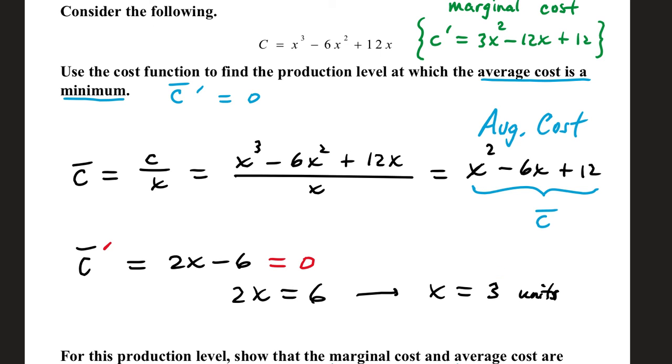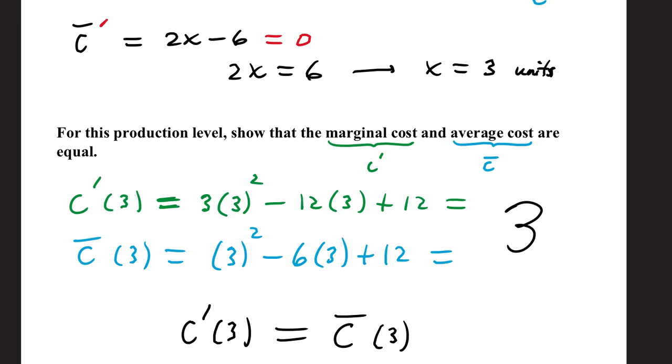Now, using this for part B, using this production level, show that marginal cost, that's the function in green, and average cost, that's this function in blue, are equal. So if we go to the function in green, top right of your screen, and we substitute in a 3, then we're going to go to this function, substitute in a 3, and check to see if they're equal. It turns out they are.